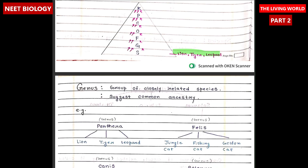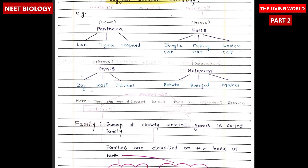Genus is a group of closely related species suggesting common ancestry. For example, Panthera is a genus, and lion, tiger, and leopard are species. Felis is a genus; jungle cat, fishing cat, and golden cat are the species. Canis is a genus, and dog, wolf, and jackal are the species. Solanum is a genus, and potato, brinjal, and tomato are species.